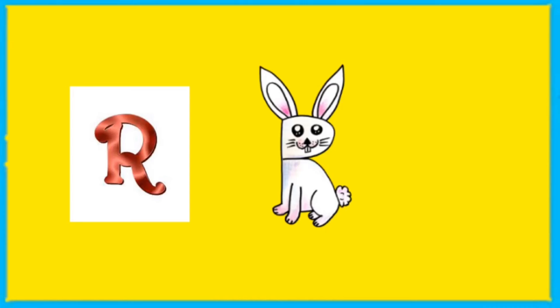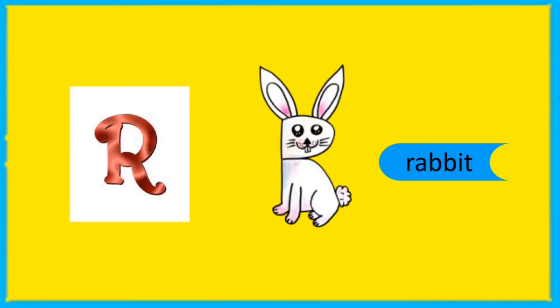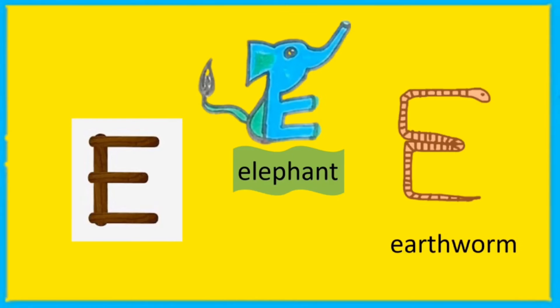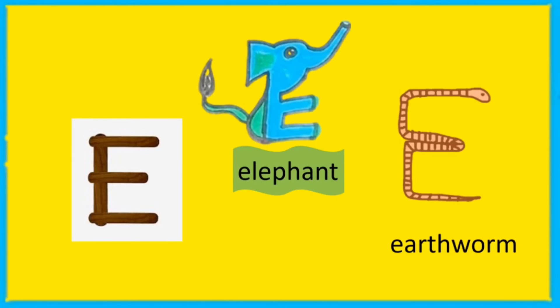Using the letter R, we can draw a picture of a rabbit. And using the letter E, we can draw two pictures — elephant and earthworm.